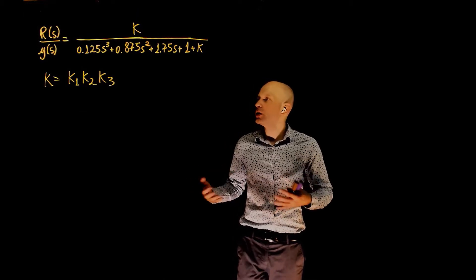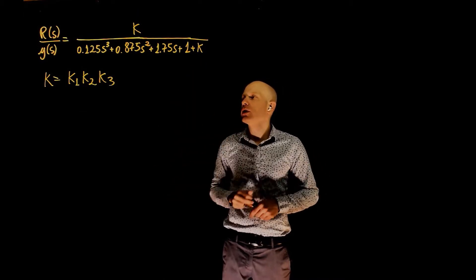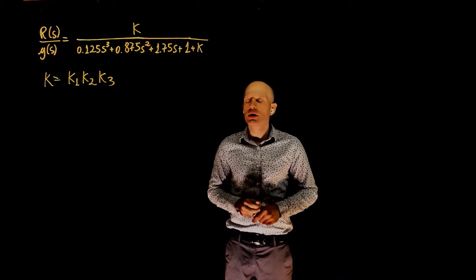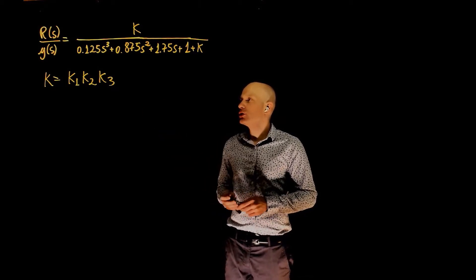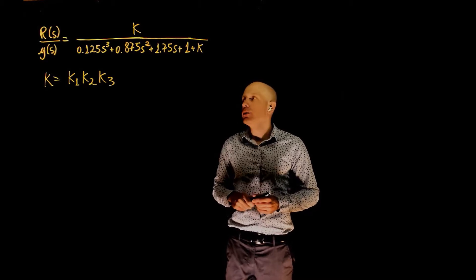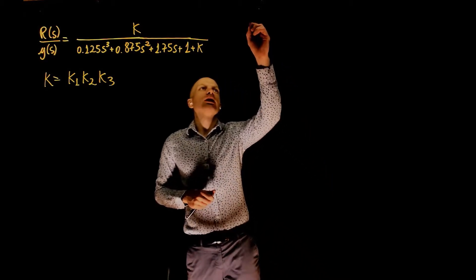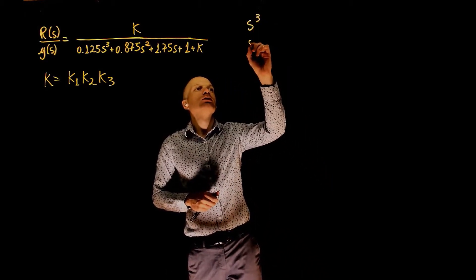We now want to evaluate the stability of this control system and find the upper bound of k that will guarantee stability in this system. This is a third order transfer function. We can now create the Routh array. We're going to go from S3 to S0.